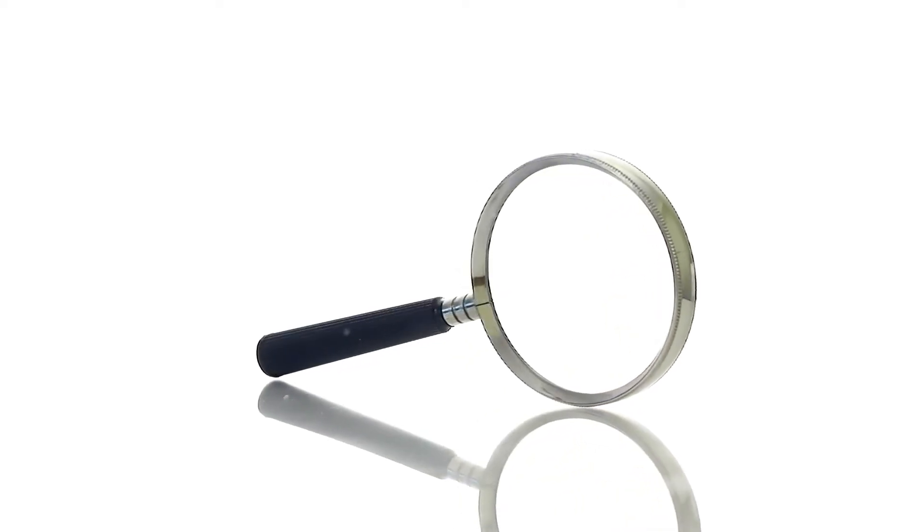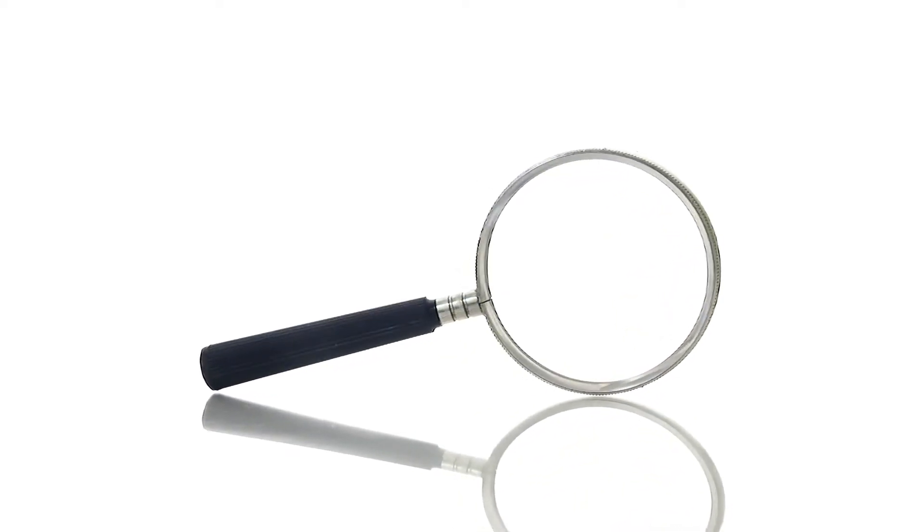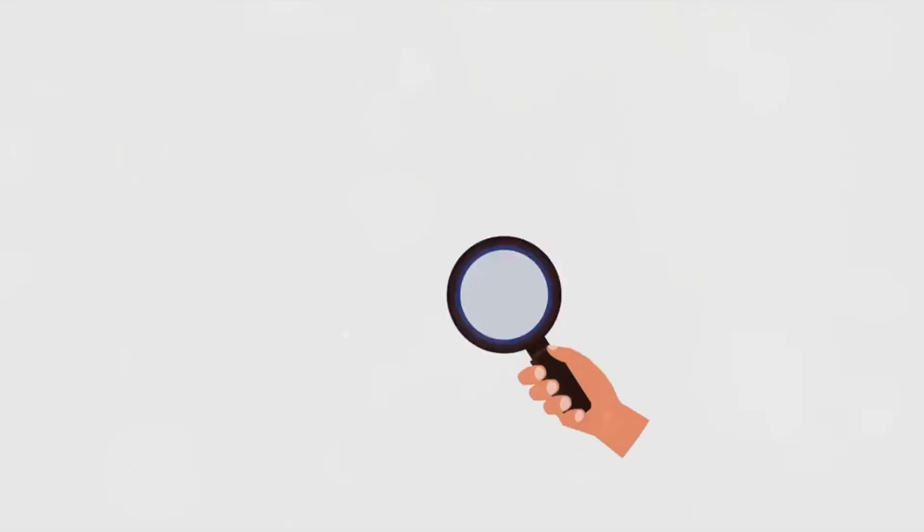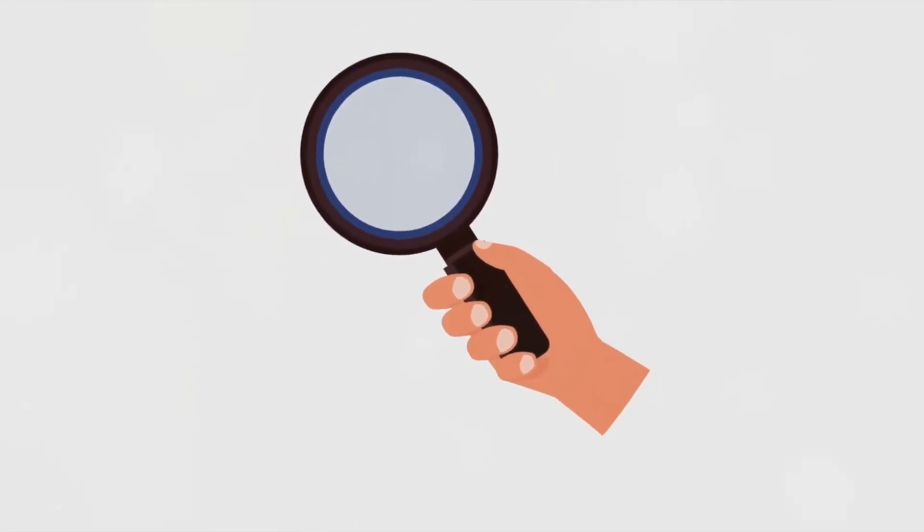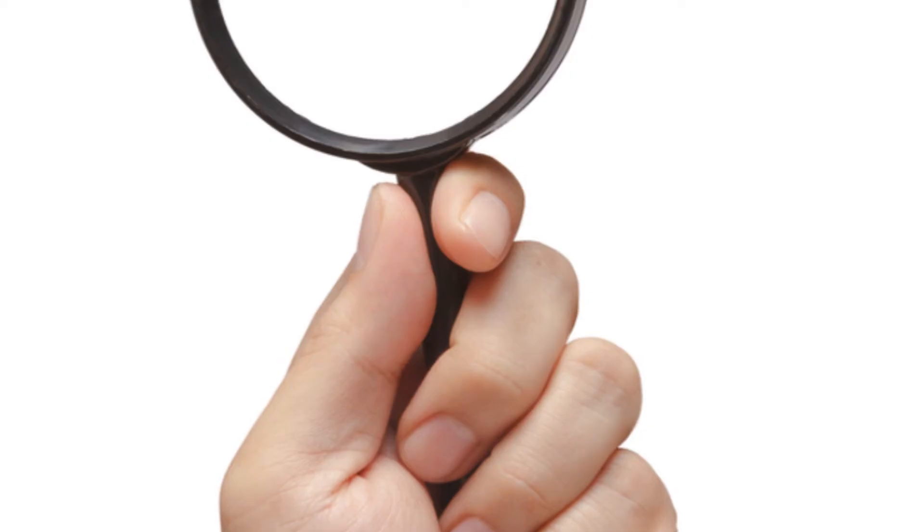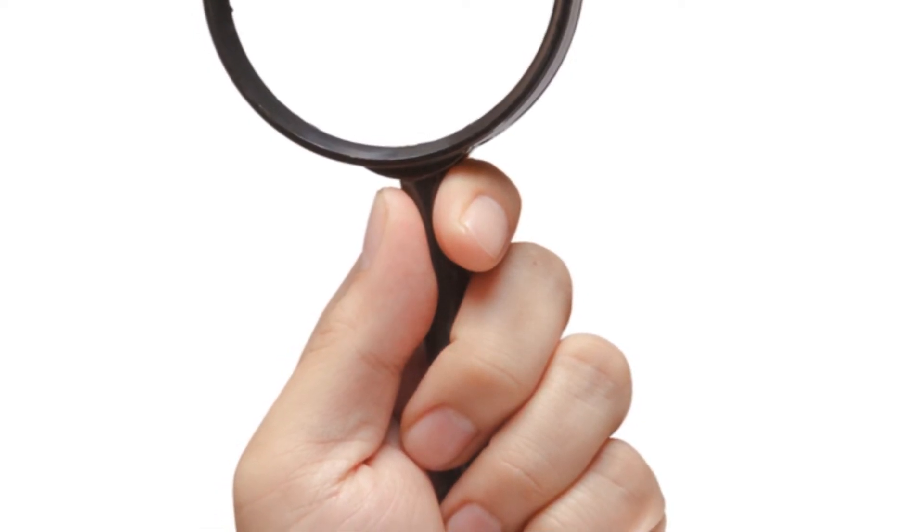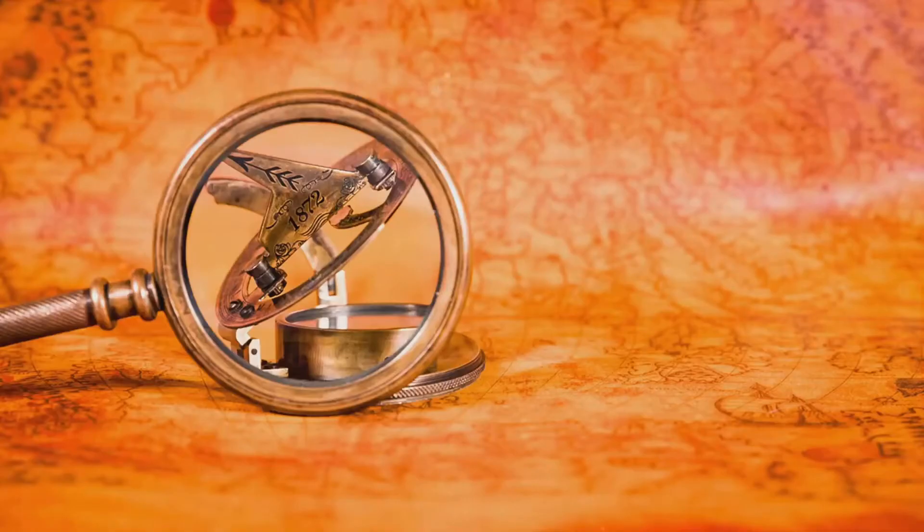Picture a magnifying glass with a handle of ornate sterling silver or a lens rimmed in pure gold. Imagine one with a handle carved from a single piece of ivory or a lens crafted from a rare crystal. These are the types of magnifying glasses that collectors around the globe covet.